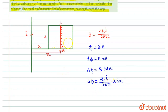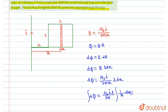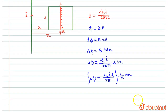This is a small portion, so for the total flux we have to integrate. Integrating both sides, the integration of dφ equals (μ₀Il / 2π) times the integral of (1/x) dx. The limit of x, as we can see in the figure, is from a to a plus l.